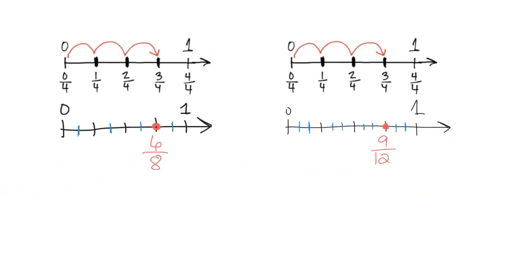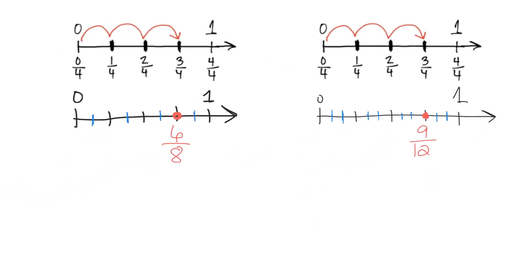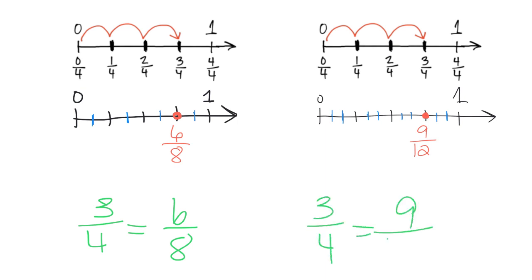So if we wanted to summarize our discovery, we could say that three fourths is equal to six eighths, and we can also say that three fourths is equal to nine twelfths. That wraps up this video where we were using the visual representation of a number line to show how and why different fractions are equivalent or equal to each other.